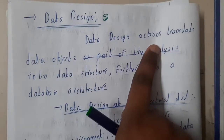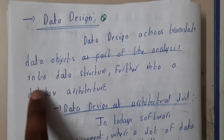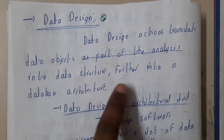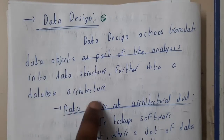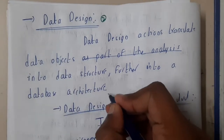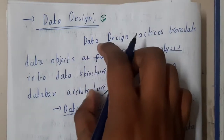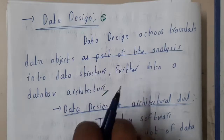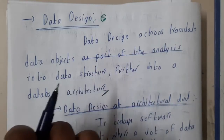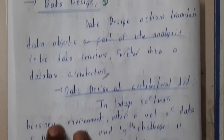Data design actions translate data objects into data structures and further into a database architecture. It involves looking at the structures — how you can store the data and how you perform operations on it.